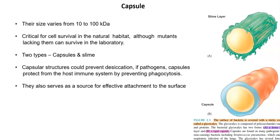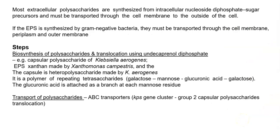Capsules mainly protect bacteria by preventing phagocytosis induced by the host immune system. They also serve as a source for effective attachment of bacteria to surfaces. Most extracellular polysaccharides are synthesized from intracellular nucleoside diphosphate and sugar precursors, and after synthesis they are transported through the cell membrane to the outside. In gram-negative bacteria, extracellular polysaccharides synthesized internally are transported through three membranes: the cell membrane, periplasm, and outer membrane. Biosynthesis and translocation using undecaprenol diphosphate are well studied in organisms such as Klebsiella aerogenes.